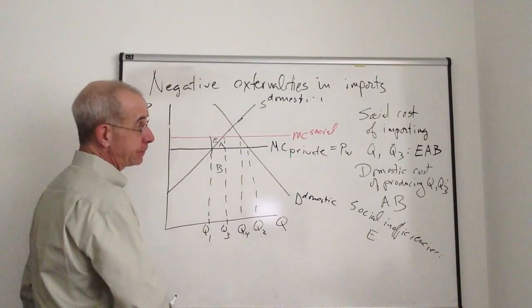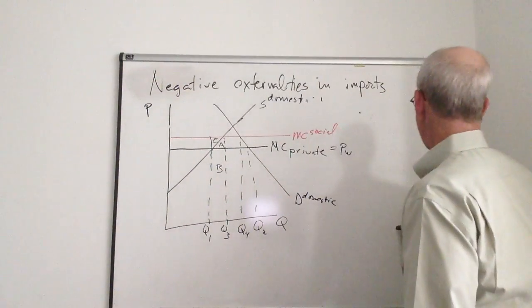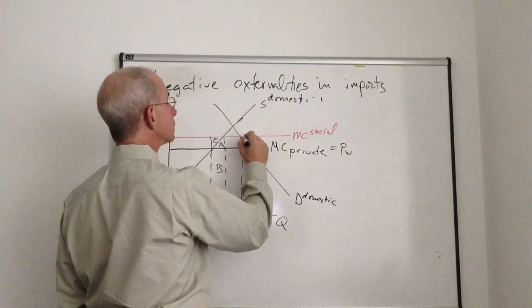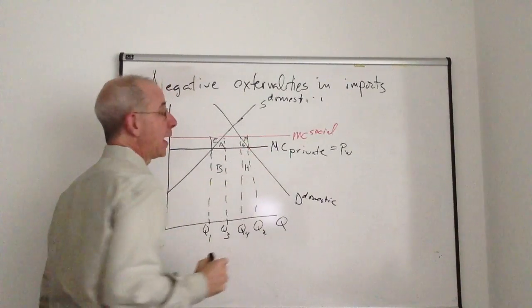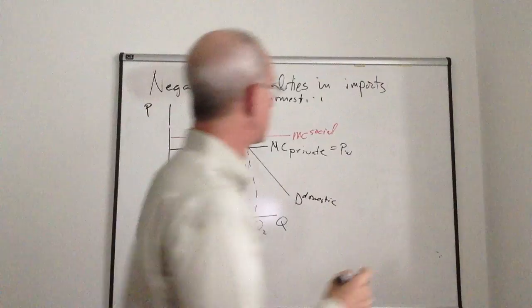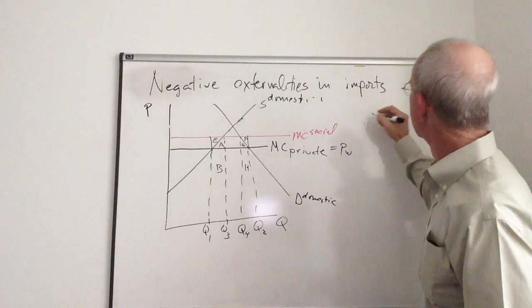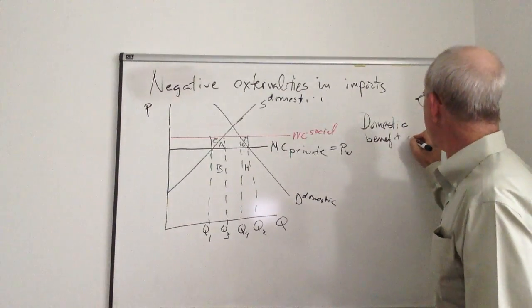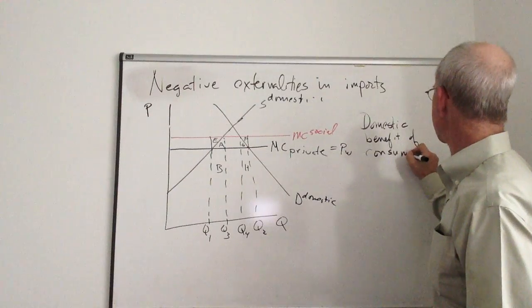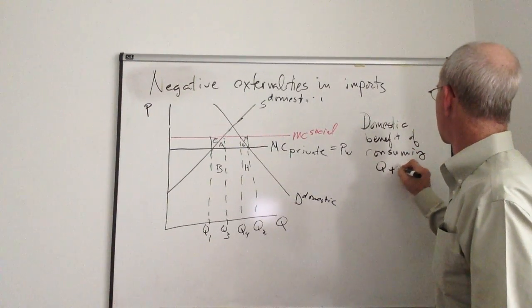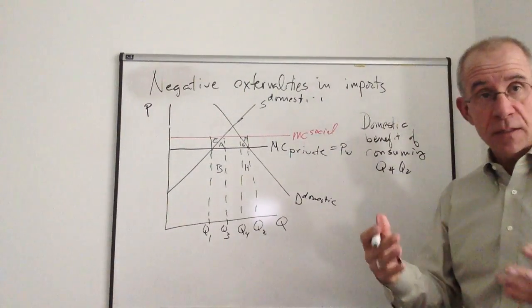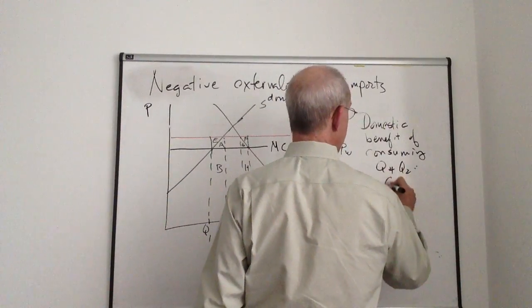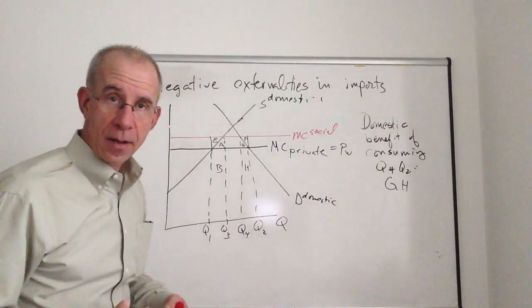The other aspect has to do with the consumption side. F, G, H. So let's look at the domestic benefit for consumers of consuming Q4 to Q2. So this is the total benefit that consumers get. For them, that cost or that benefit is G, H. It's the area under the demand curve. So this is how much consumers value this.